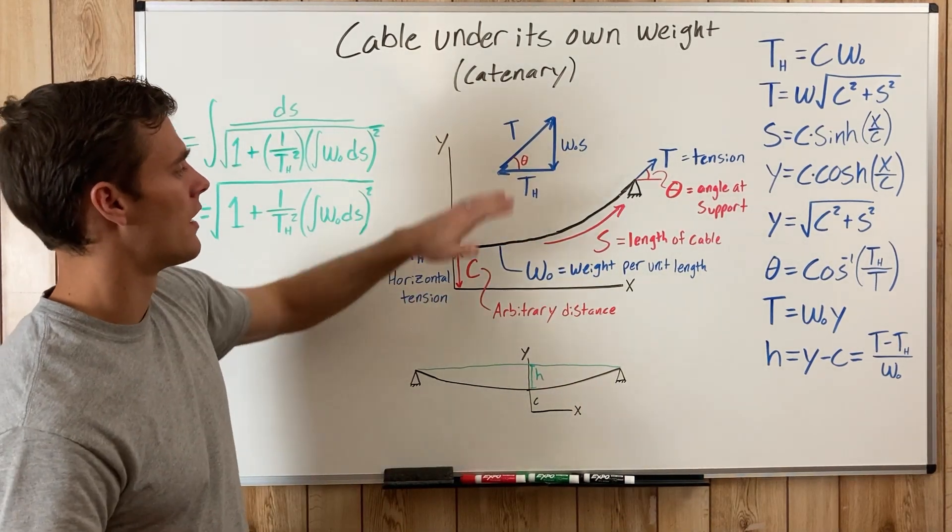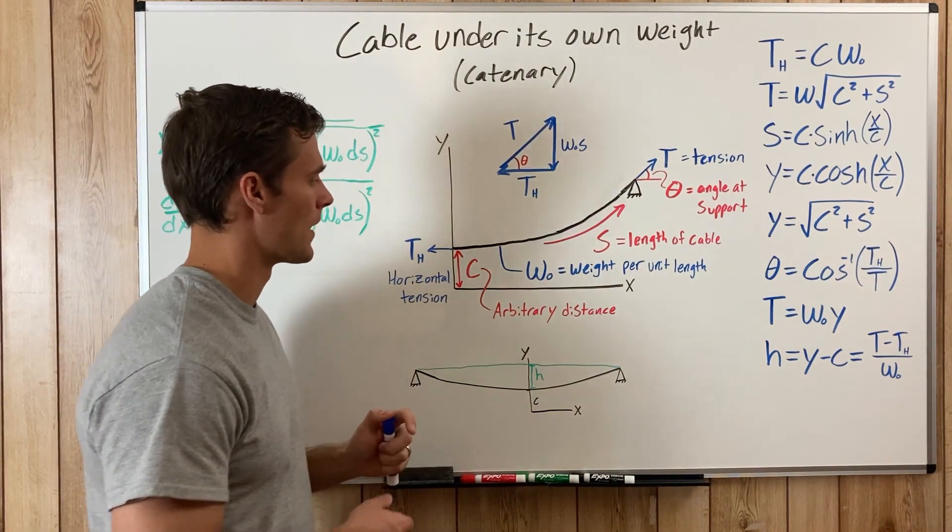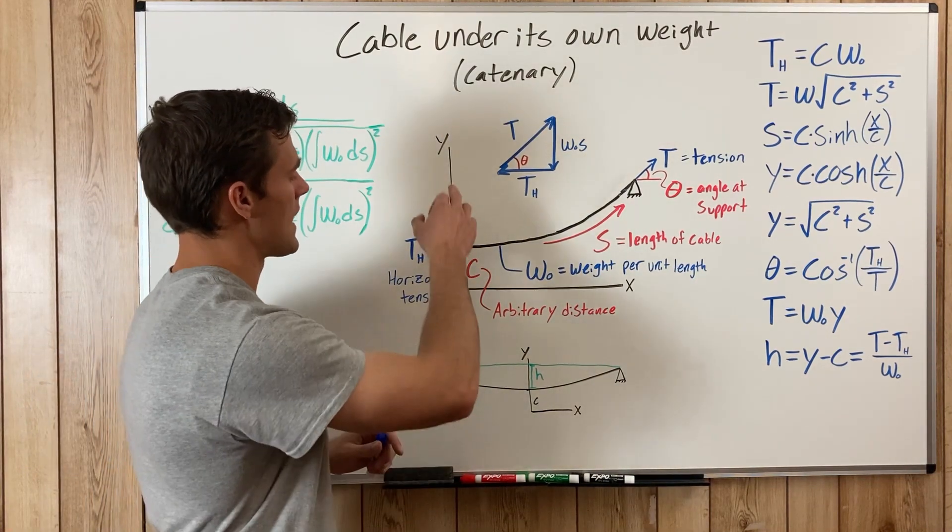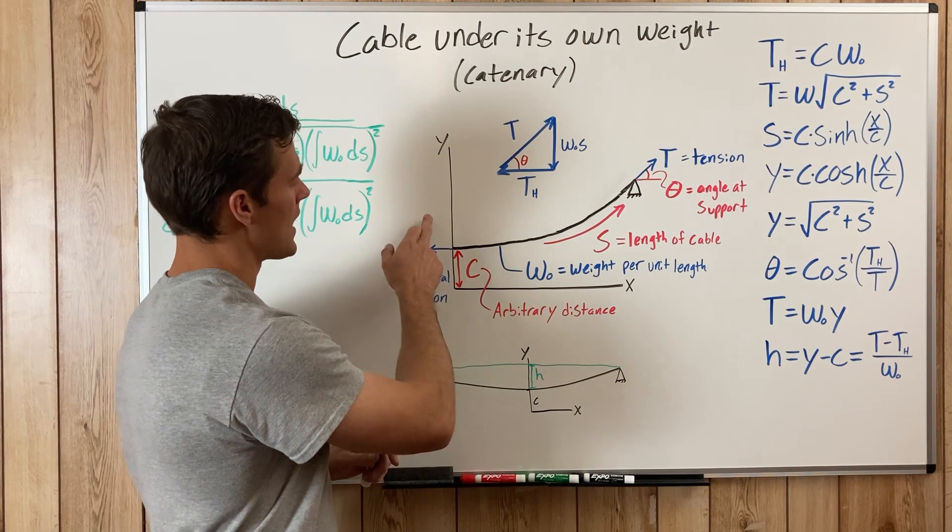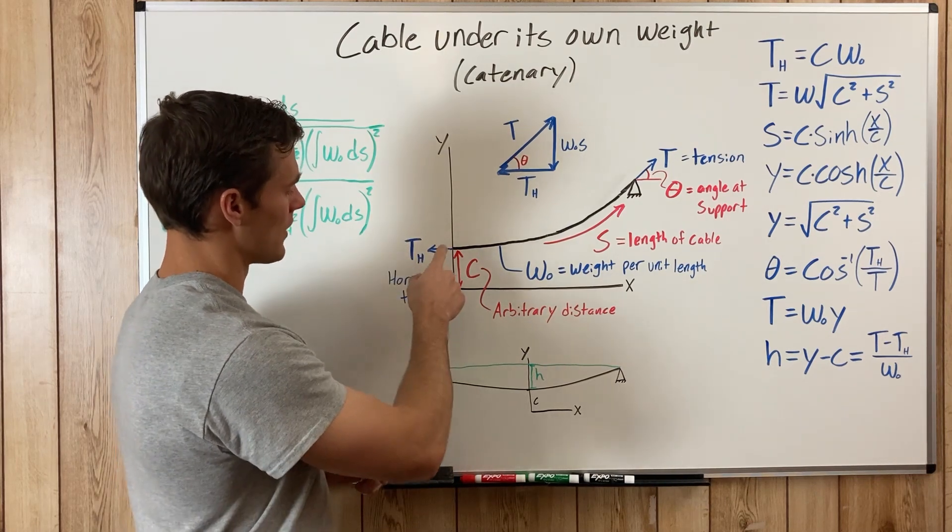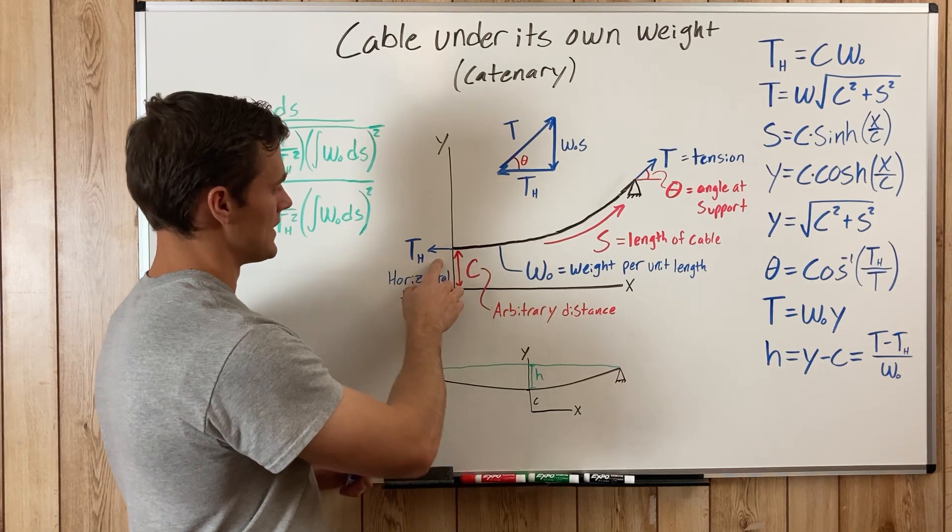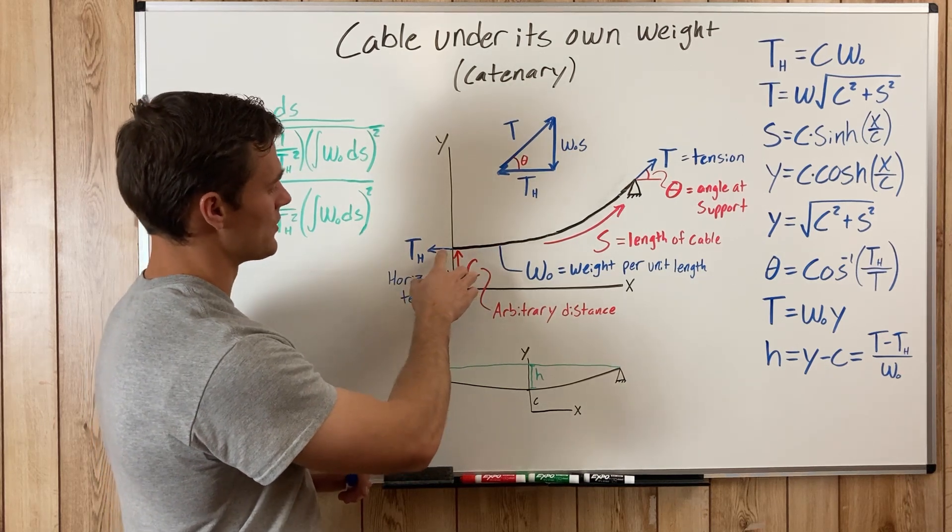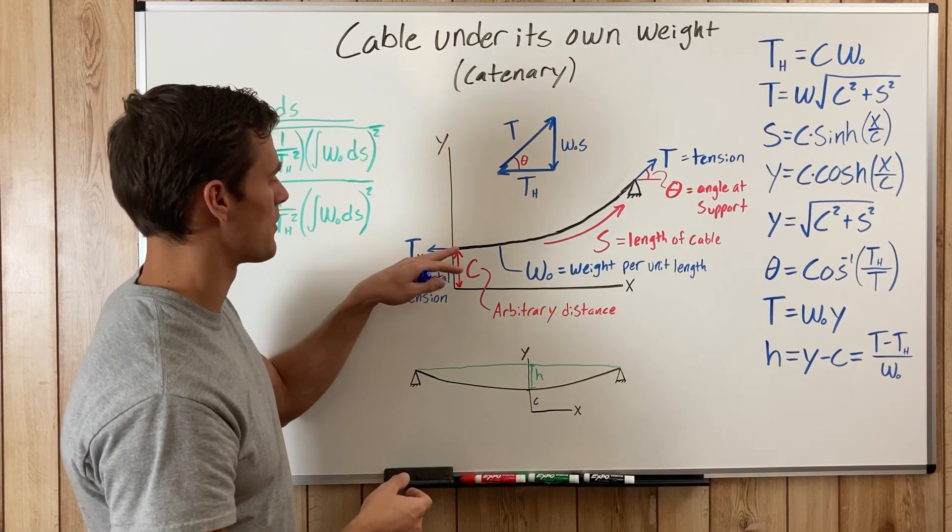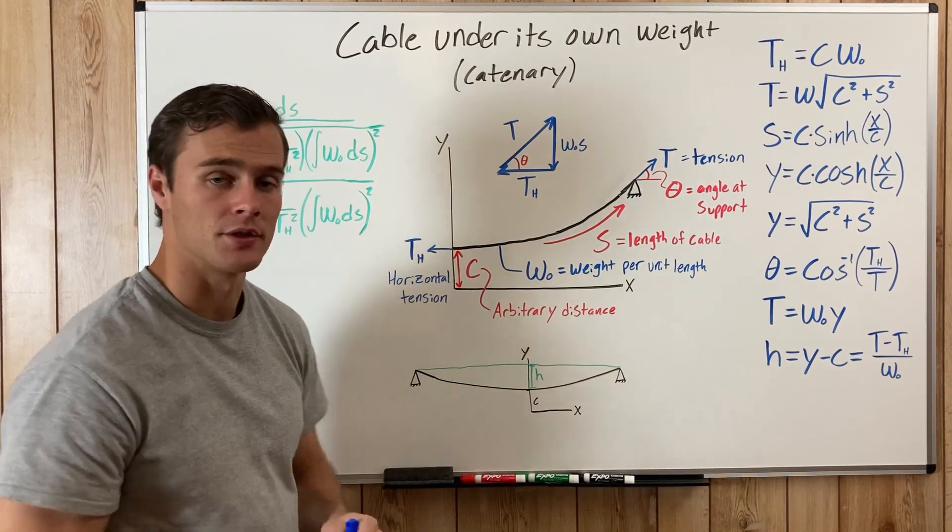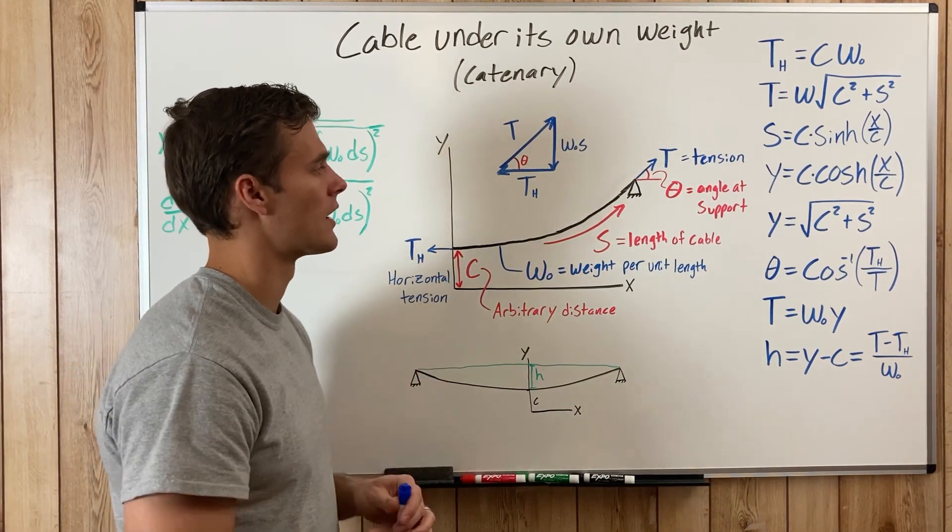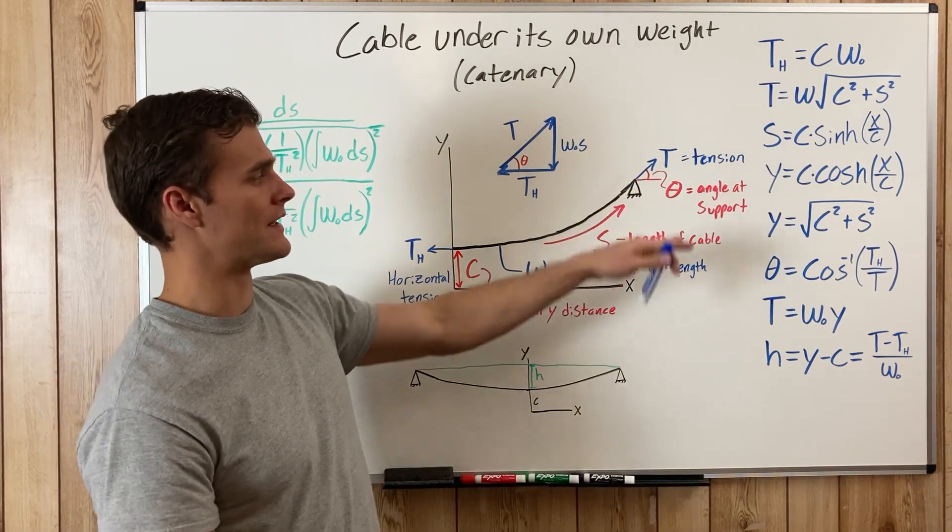All of these equations come from these diagrams where we've got our axes set up so that our y-axis goes right through the point on the cable that has a zero slope. So the only tension in that part of the cable is the horizontal tension, and that's important to set it up so these equations will work.